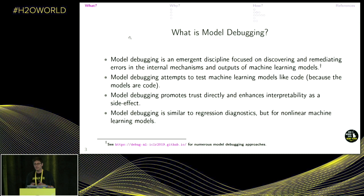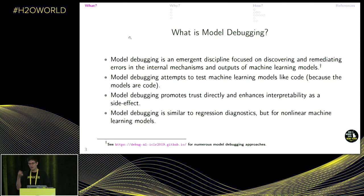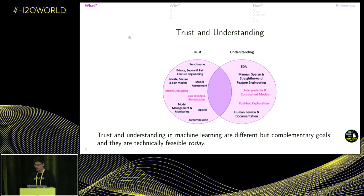One thing I really want to communicate clearly is that model debugging focuses on trust. The last two H2O Worlds and all over the world, I've been talking about explainability and transparency in machine learning — those things are about understanding machine learning. Today I want to talk about trusting machine learning. They certainly overlap, but they are a little bit different. I would say debugging is focused on trust, while those other efforts are more about understanding.